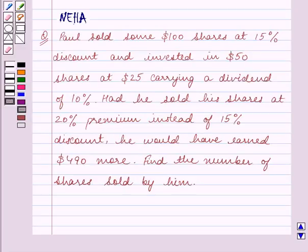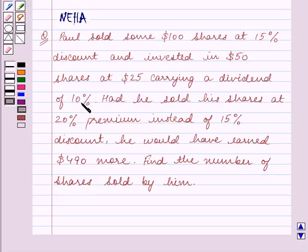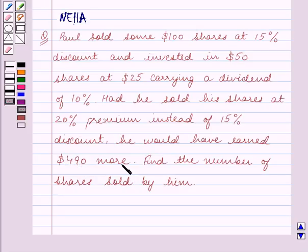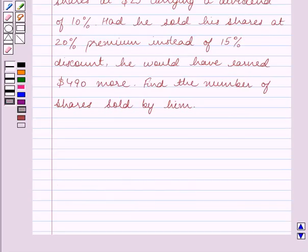Hello and welcome to the session. In this session, we will discuss the following question: Paul sold some $100 shares at 15% discount and invested in $50 shares at $25 carrying a dividend of 10%. Had he sold his shares at 20% premium instead of 15% discount, he would have earned $490 more. Find the number of shares sold by him. Let's start the solution now.